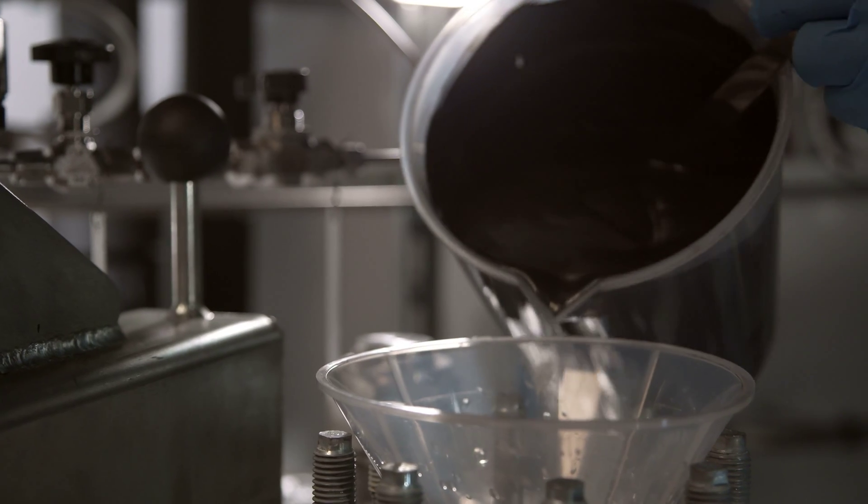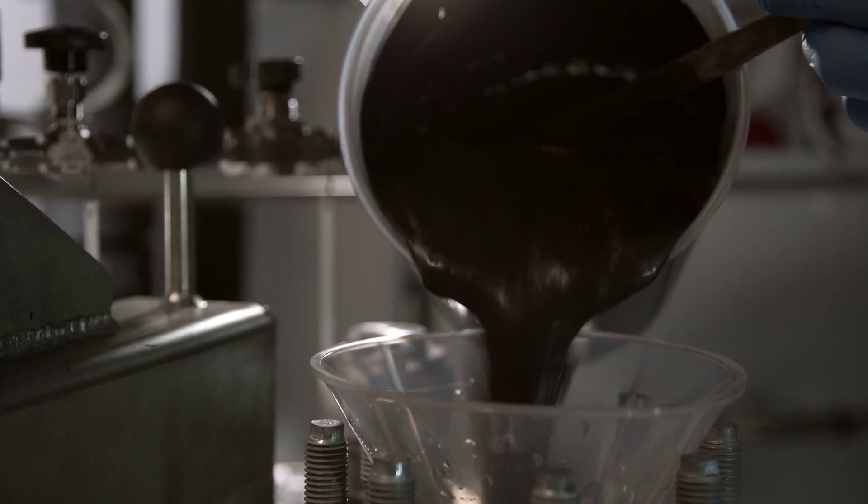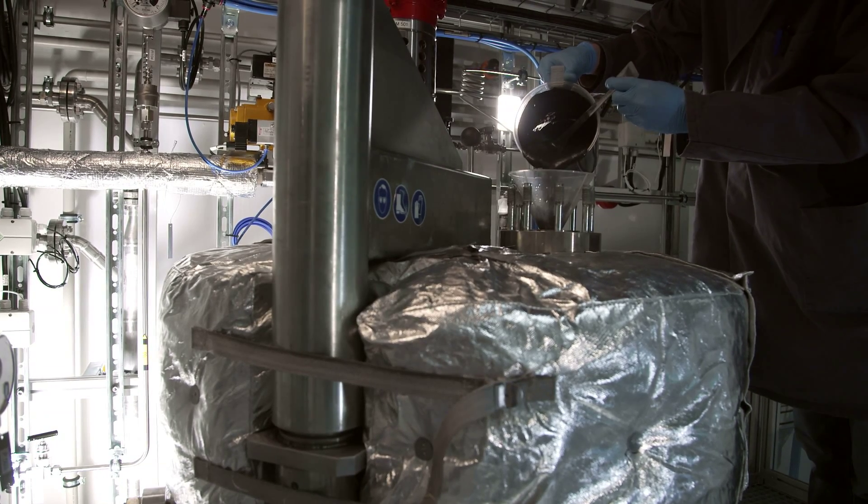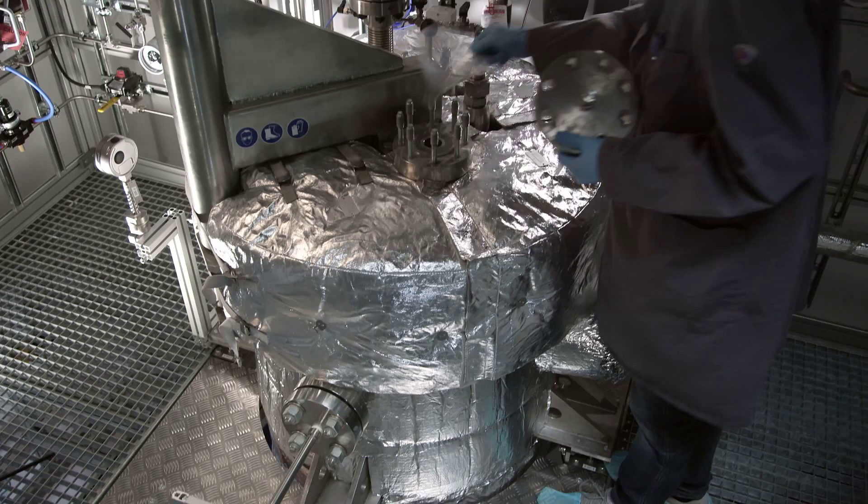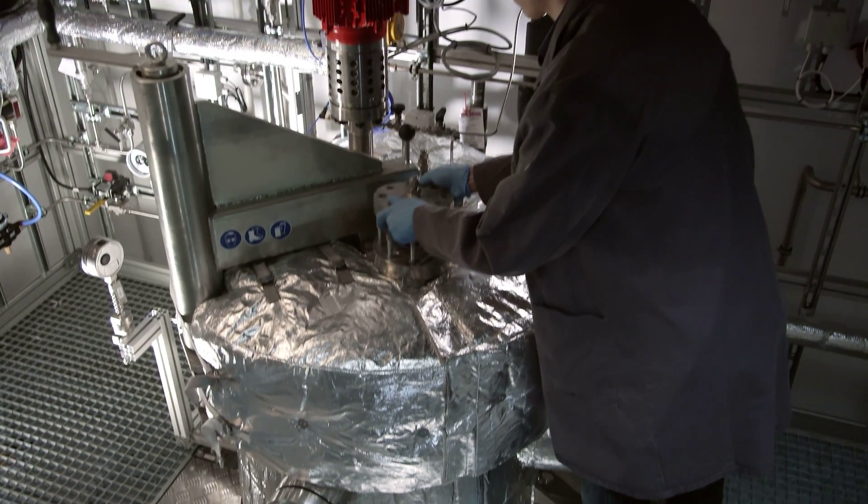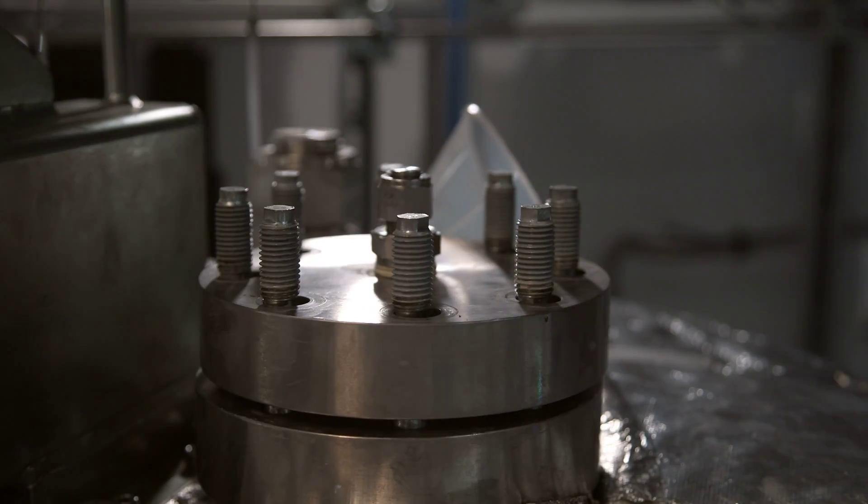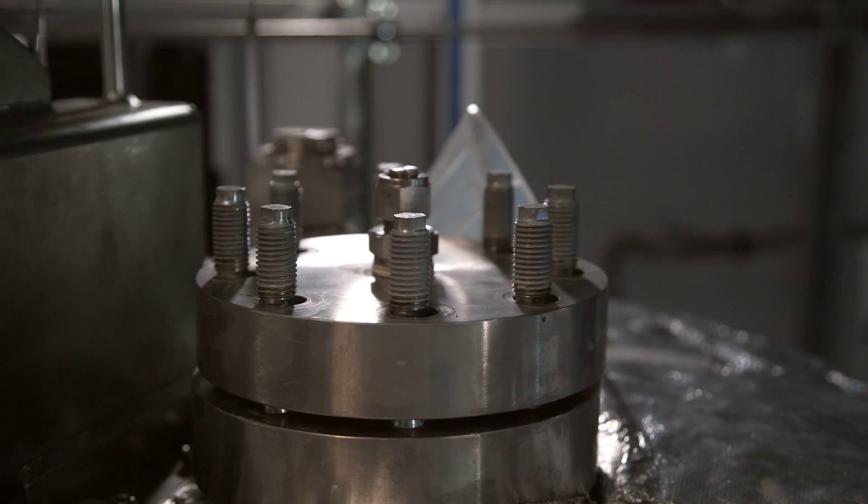In what is known as the cool process, a suspension is produced from water and black mass. They fill this into a reactor. At high pressure, 100 bar, and at a temperature of over 200 degrees Celsius, water and carbon dioxide are also added.